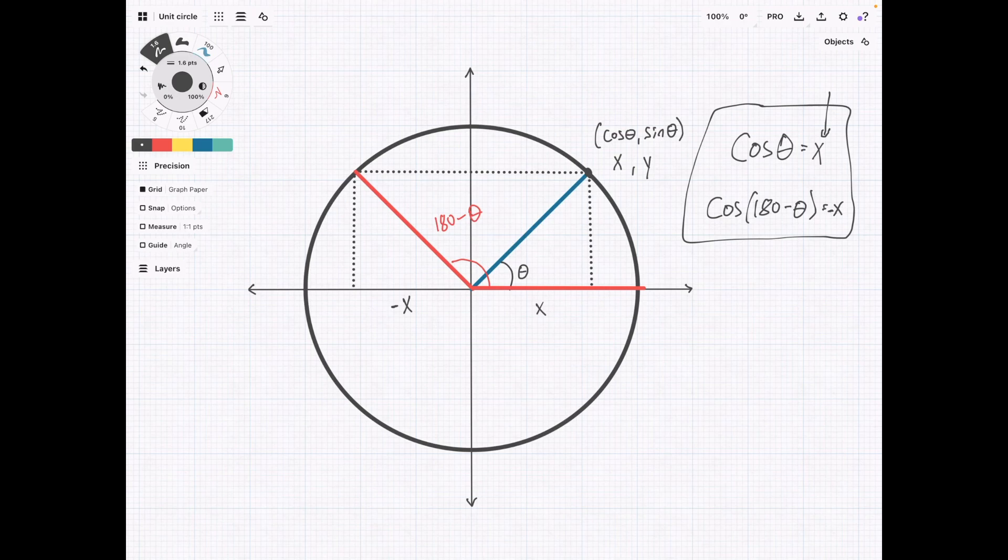If we look at the same thing for sine, sine is the y value, so it's these two values that we're looking at. Sine of theta is going to equal positive y, and sine of 180 minus theta is also going to equal positive y. So these two things are going to be equal.